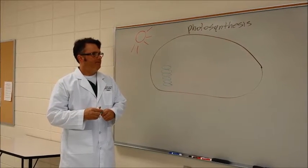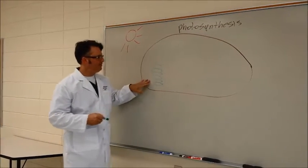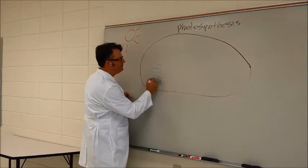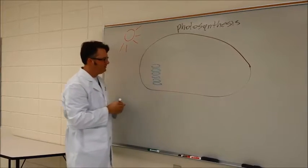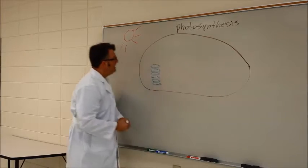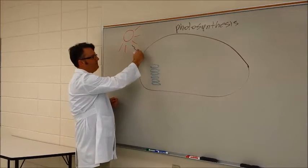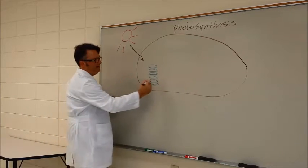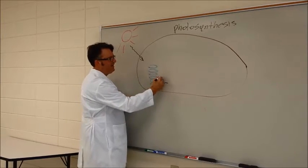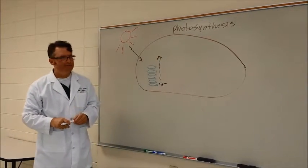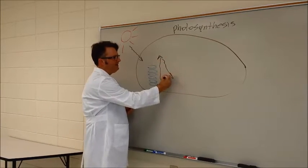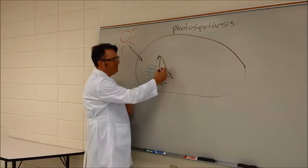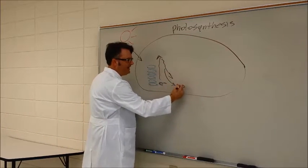Inside of the chloroplast are stacks of thylakoid discs. What happens is radiant energy from the sun shines down on these stacks and it causes electrons inside of these stacks to be excited to a higher energy level. Then as these move back down to a lower energy level, there is energy released. And what happens is ATP is catalyzed.